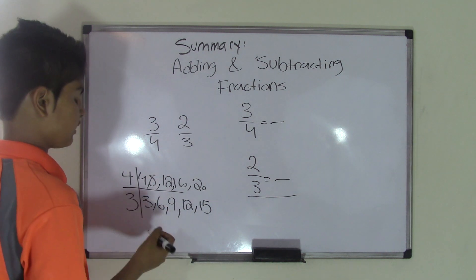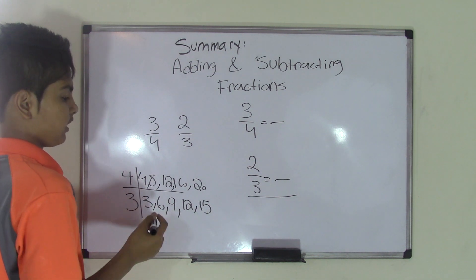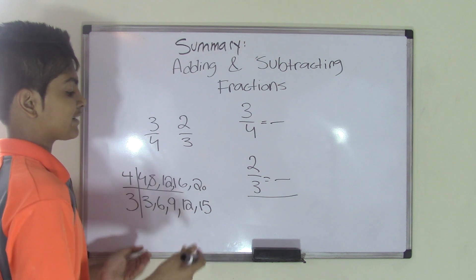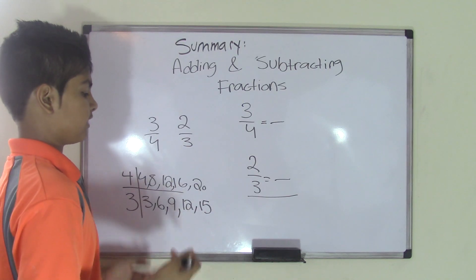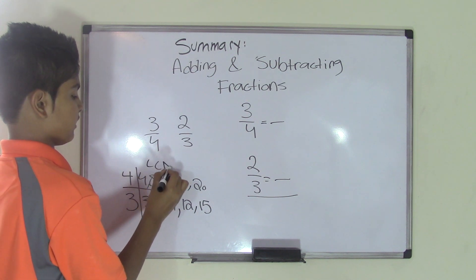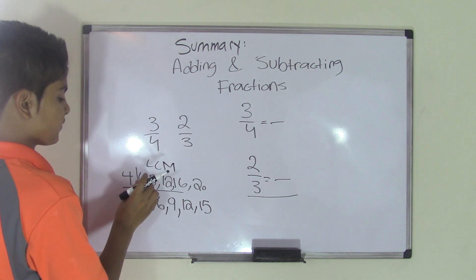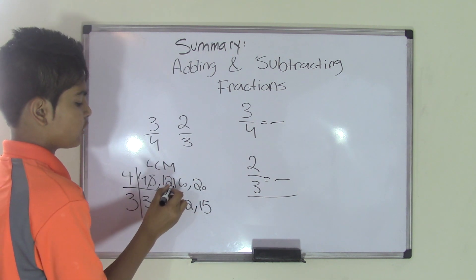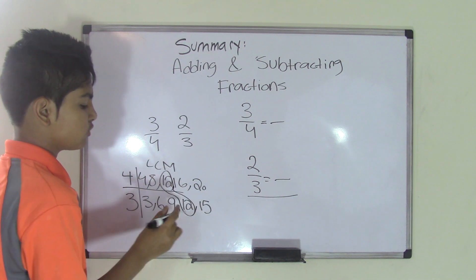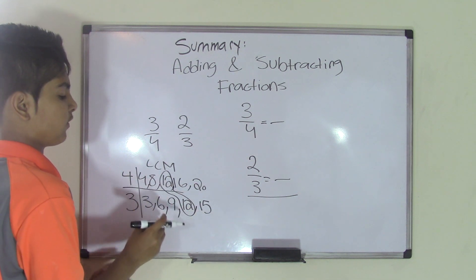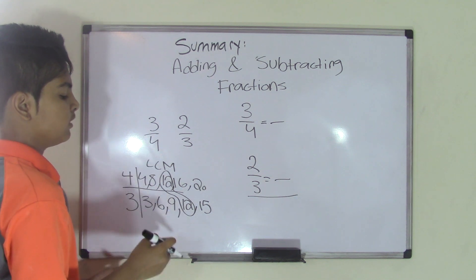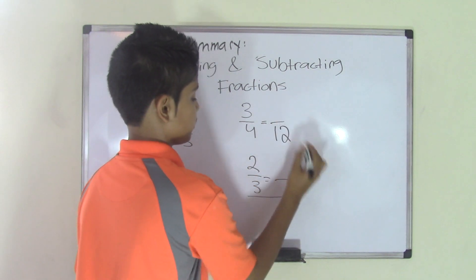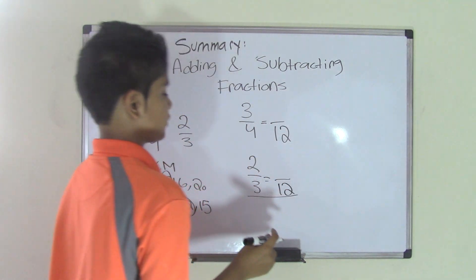Now let's find the common denominator — actually, what we're finding is the least common multiple, or LCM. So there is no four in the threes list, no eight, but there is a twelve! So twelve and twelve are the two common numbers, and twelve will be the least common multiple because it's the first common multiple. So twelve is the LCM for four and three.